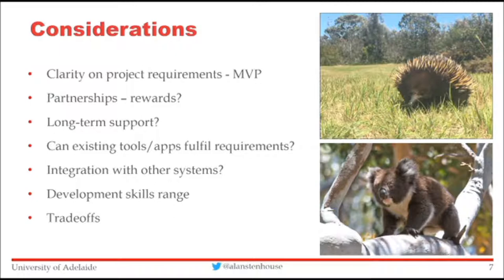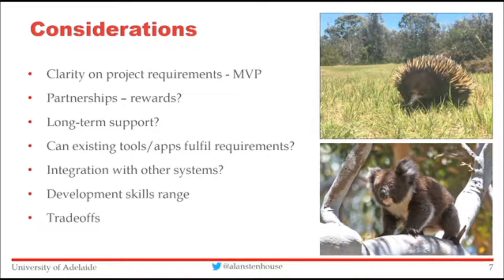Lastly, considerations for your own project: prioritise your requirements — have must-haves, good-to-haves, and nice-to-haves. Go for a minimum viable product and enhance it. Consider your partnerships and rewards — financial, publications, prestige, personal satisfaction. Plan for long-term support if required. Check if existing tools or apps can fulfil your requirements; BioCollect is a great platform for this. Talk to your local citizen science group or national body for advice. Consider whether integration with other systems is required — it all takes extra time. There's a range of skills required including database and mobile development. Ultimately, there are trade-offs: time, features, and quality.